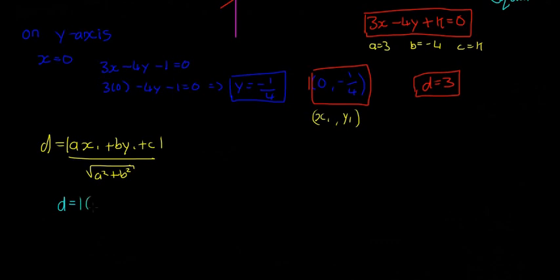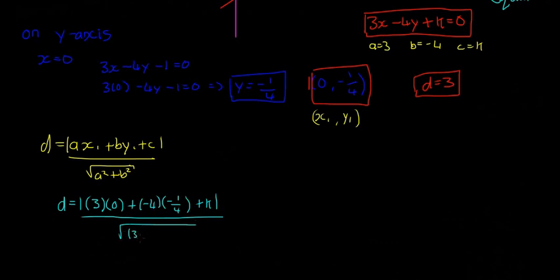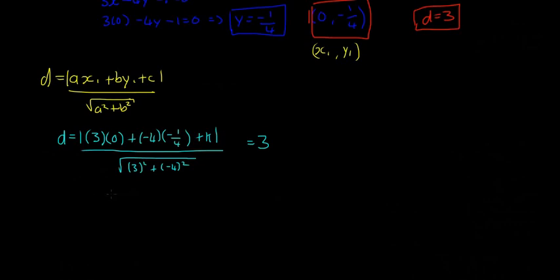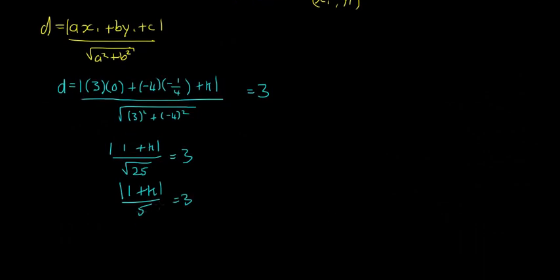So D equals the modulus of 3 times 0, plus minus 4 times minus 1 over 4, plus k, all divided by the square root of 3 squared plus minus 4 squared, and that equals 3. Minus 4 multiplied by minus 1 over 4 is just 1, so we get the modulus of 1 plus k, divided by the square root of 25, equals 3. That means the modulus of 1 plus k divided by 5 equals 3. Multiplying across by 5, we get the modulus of 1 plus k equals 15.